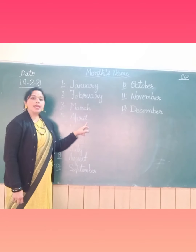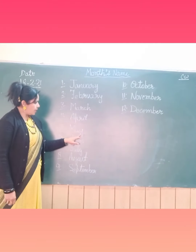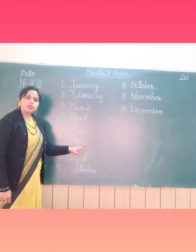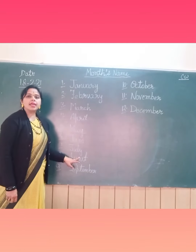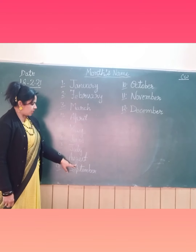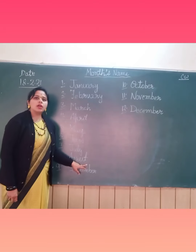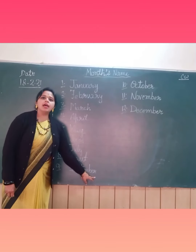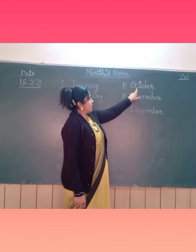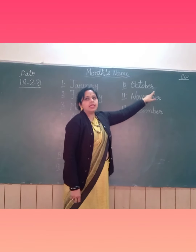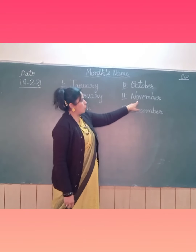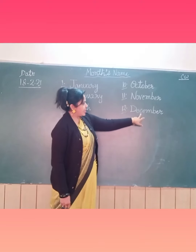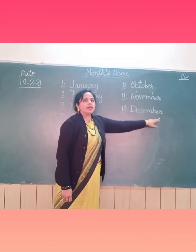P-R-I-L April, M-A-Y May, J-U-N-E June, J-U-L-Y July, A-U-G-U-S-T August, S-E-P-T-E-M-B-E-R September, O-C-T-O-B-E-R October, N-O-V-E-M-B-E-R November, D-E-C-E-M-B-E-R December.